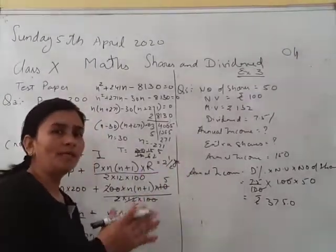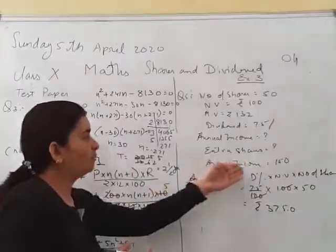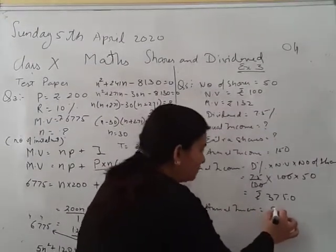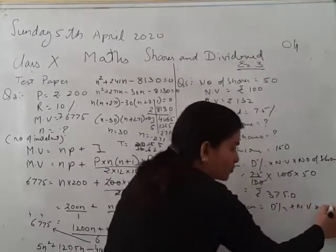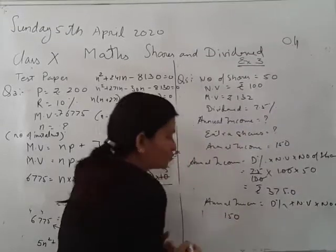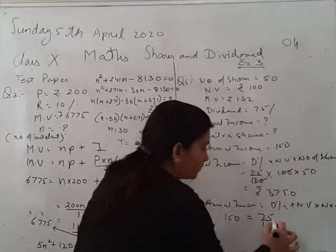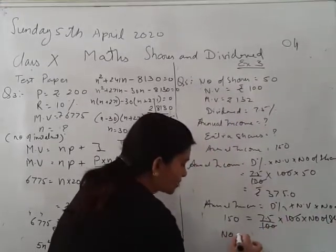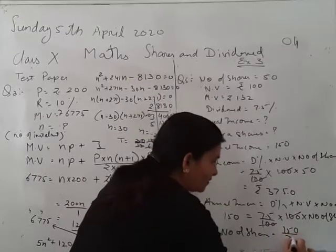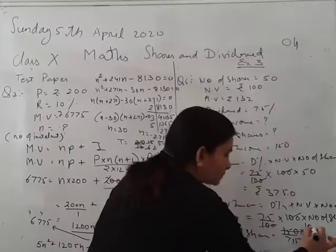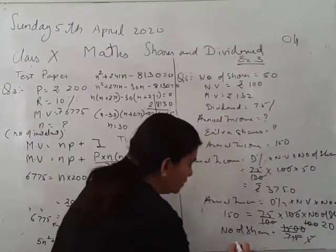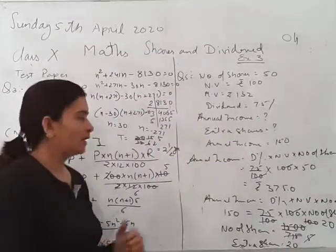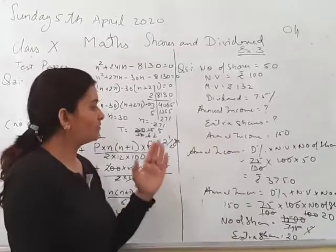Now the question is how many extra shares you will buy from the additional income of 150 rupees. Using the same formula: 150 equals 7.5 by 100 into 100 into number of shares. The 100 cancels. So the number of extra shares equals 150 divided by 7.5, which gives 20. So 20 extra shares will be purchased so that the income increases by 150.